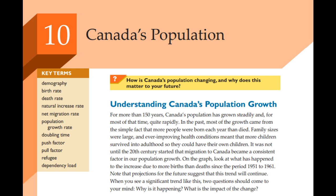A shrinking population puts a real strain on the social safety net — fewer people working to support a growing older population. There's also an impact on economic innovation and growth potential. Japan is actually trying all sorts of things to deal with this, from automation to encouraging people to have larger families. So we've got declining birth rates on one hand and rising immigration on the other.